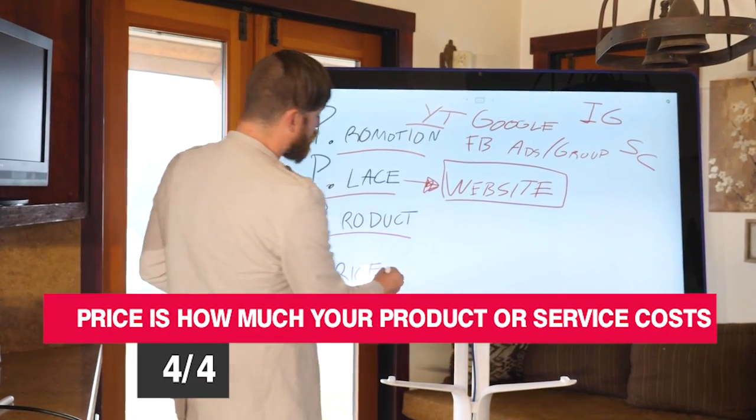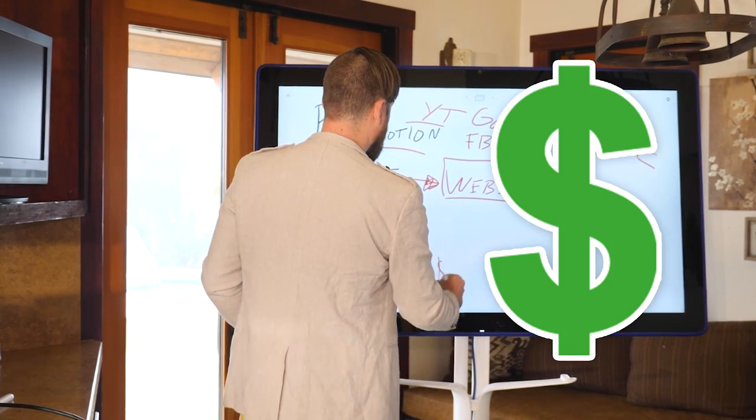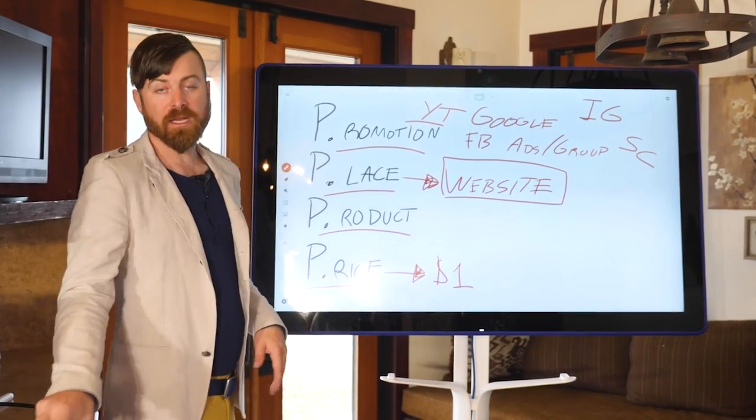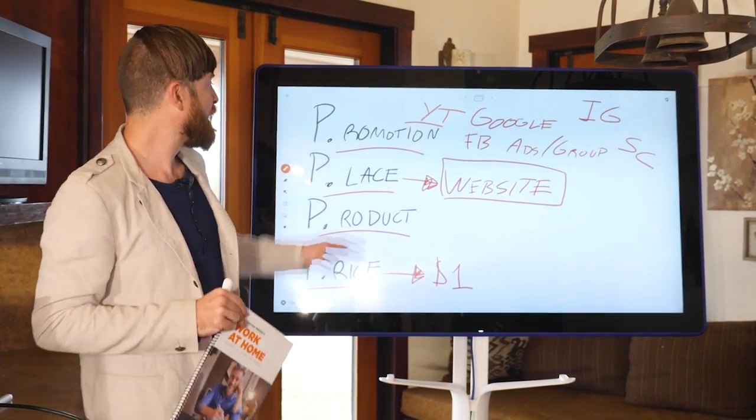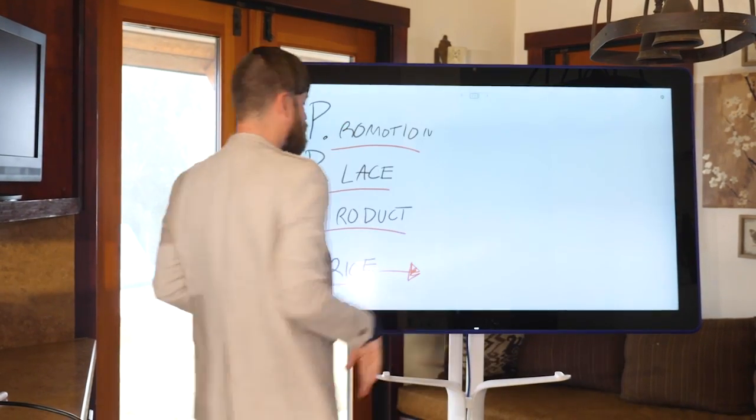And price. Price needs to be congruent too. The price is simply the price of the product. In my case, it's one dollar. I'm going to be using my book as an example in illustrating the four P's of marketing. Let's get rid of these and let's do this.